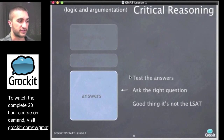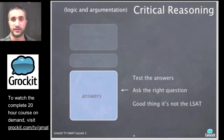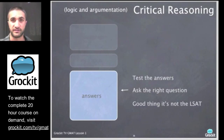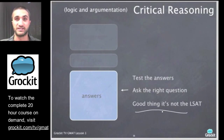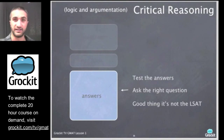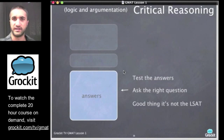When working answer choices, we're not going to read one and ask ourselves if it's right or wrong. Instead, we'll test the answer with a specific question based on our understanding of the question type. If we ask the right question, we can determine which answer is logically valid. You should be happy it's not the LSAT, which has far more critical reasoning questions with nastier language. GMAT questions can get difficult, but they're more concrete and predictable.